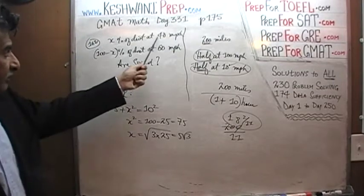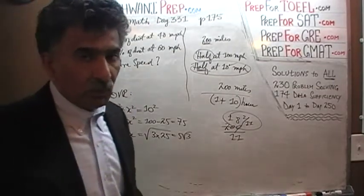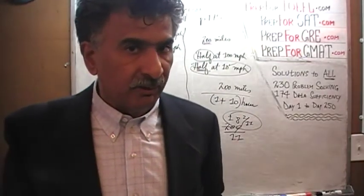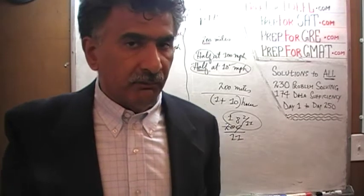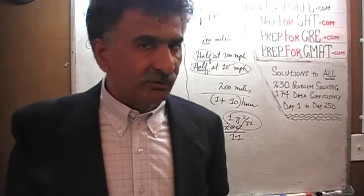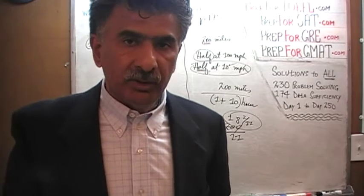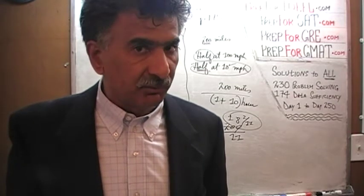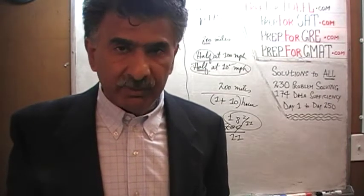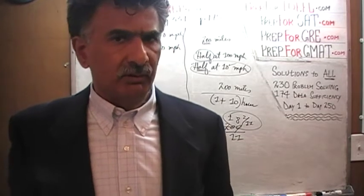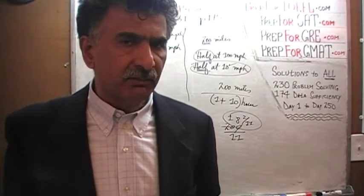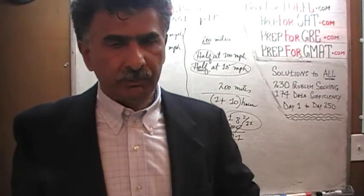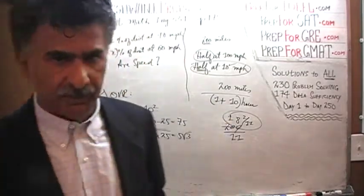We can't just take the average of the two speeds. There are two ways to solve this problem. One way is to solve it algebraically in the classical method. Another way is to simply make up a number for the variable, plug in the values, and convert this algebra problem into a simple arithmetic problem. That's what we are going to do — we are going to make up a number for X.